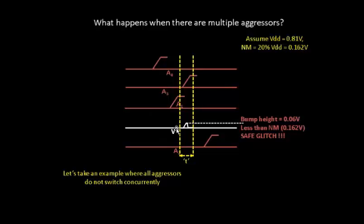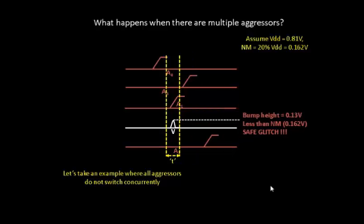Next, if you look at the contribution of this particular aggressor on the victim, the bump height contribution is 0.13 volts, which is also 30 millivolts or 0.03 volts less than the noise margin.